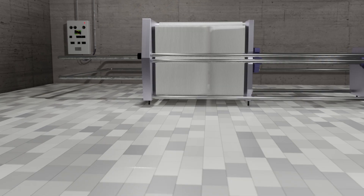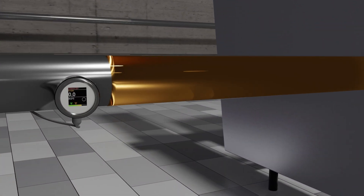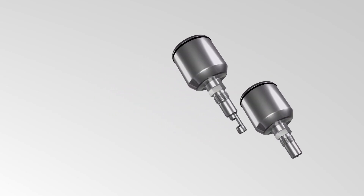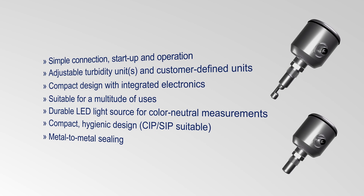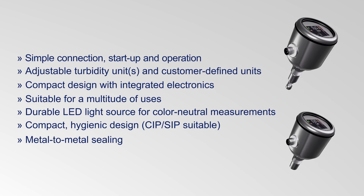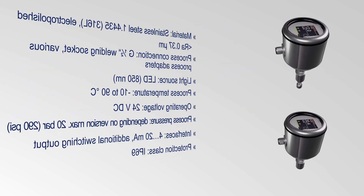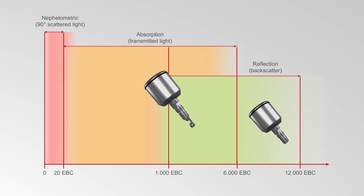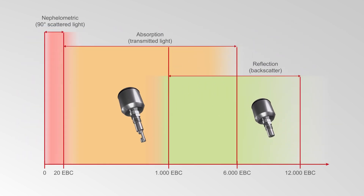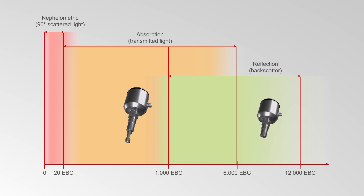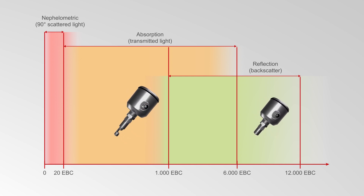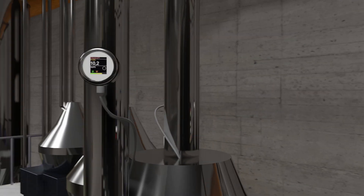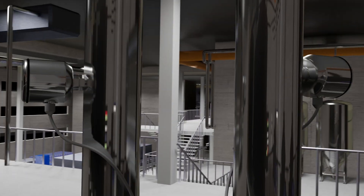It is possible, for example, to precisely control the yeast draw-off or to monitor the layer filter with regard to possible filter breakages. The compact sensors in the Expect range were developed with the user in mind and are constantly being optimized. The sensors are easy to install and use. The Expect range detects a very wide range of turbidity conditions, making it suitable for a variety of processes — including separator control, phase separation, filter monitoring, and the entire yeast management.